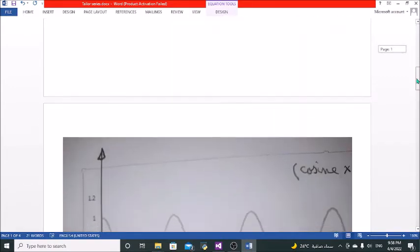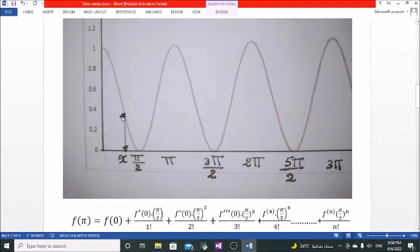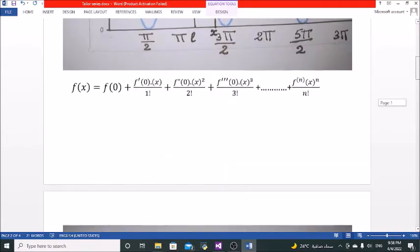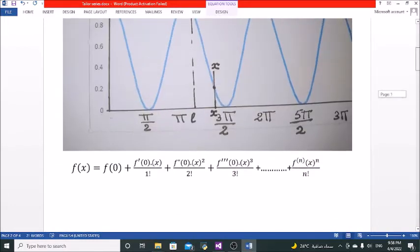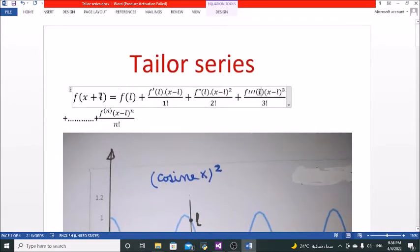So what if we want to find the value of function at x? We simply consider as if our l is at zero, and substitute in this above relation f of x plus l. So we would obtain f of x equals f of 0 plus f dash of 0, where l is 0 in this case.